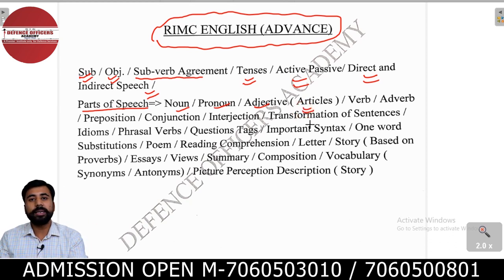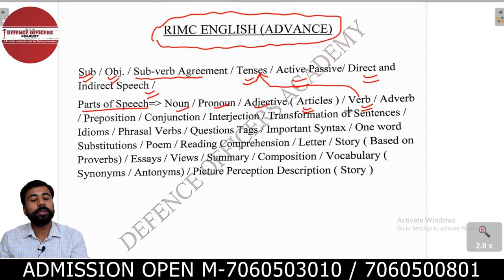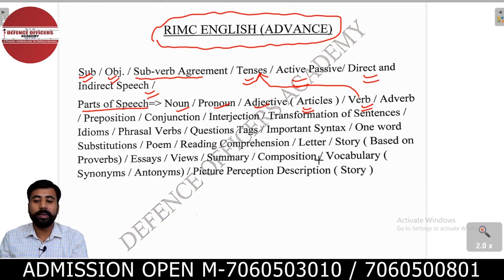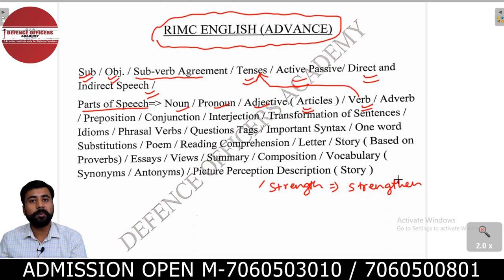Then articles — this time the last RNC question was based on articles. Then verb, which is very important. Verb and tenses are related to each other. This time a question was asked where you were given a word that was a noun and you had to write its verb form. For example, 'strength' is a noun — what is the verb? There are many words that have both a noun and a verb form.